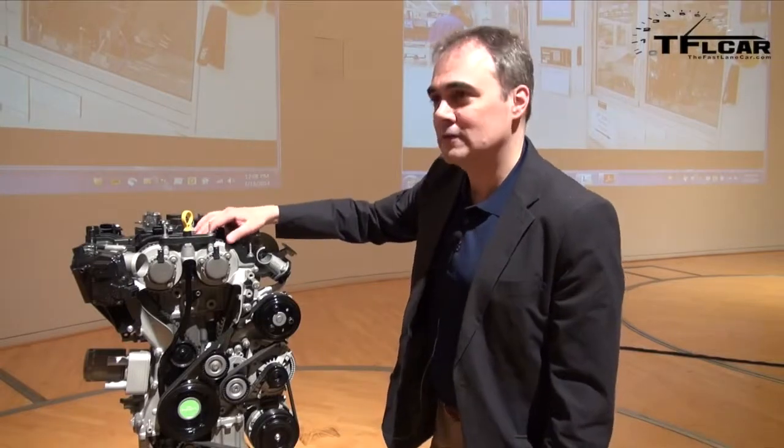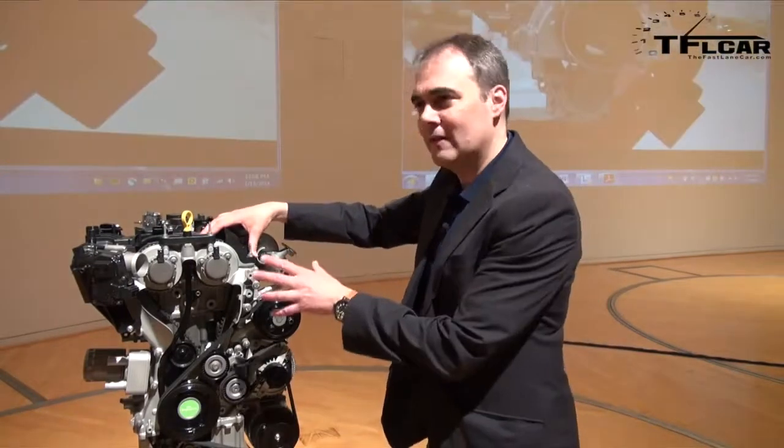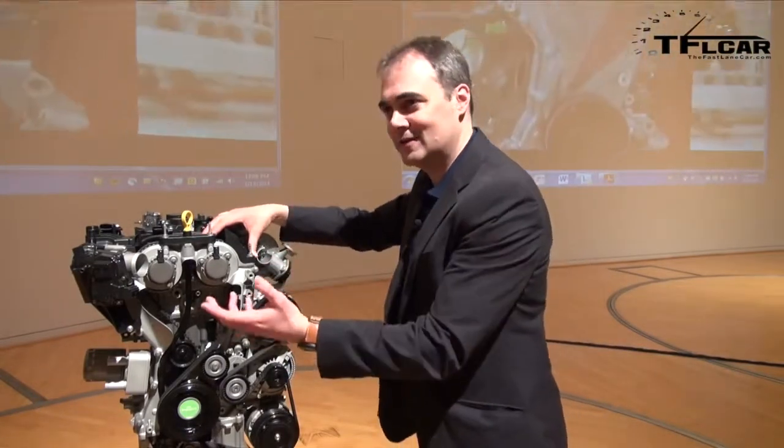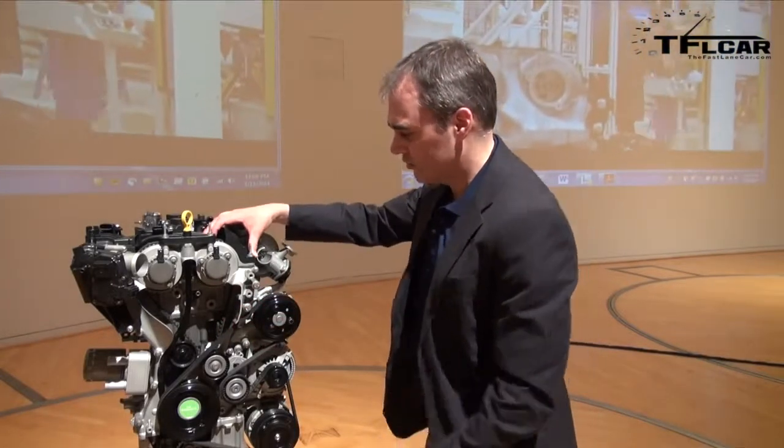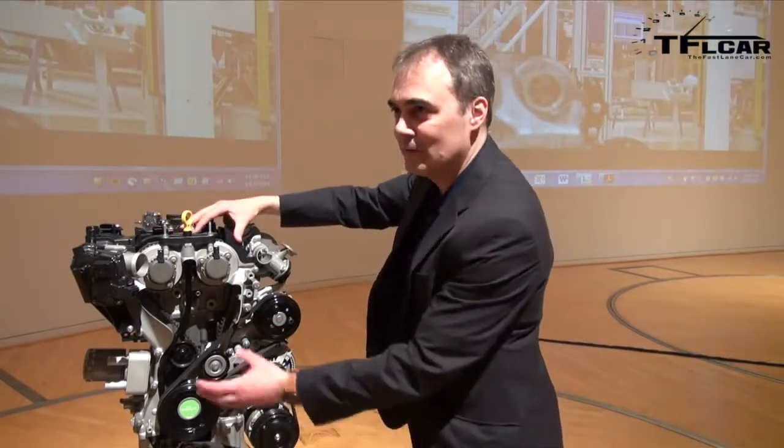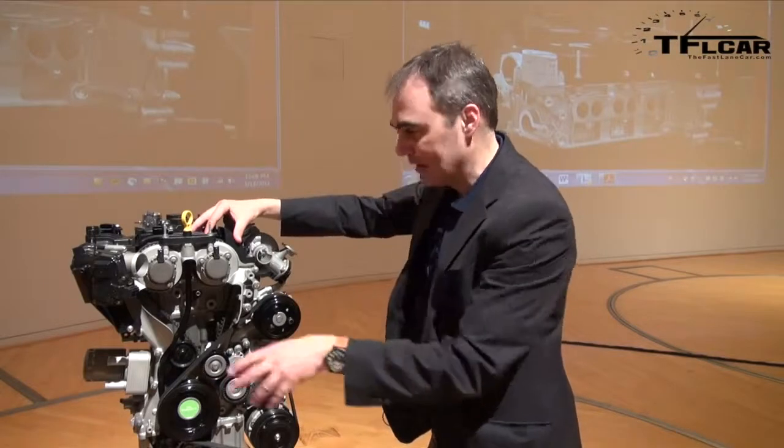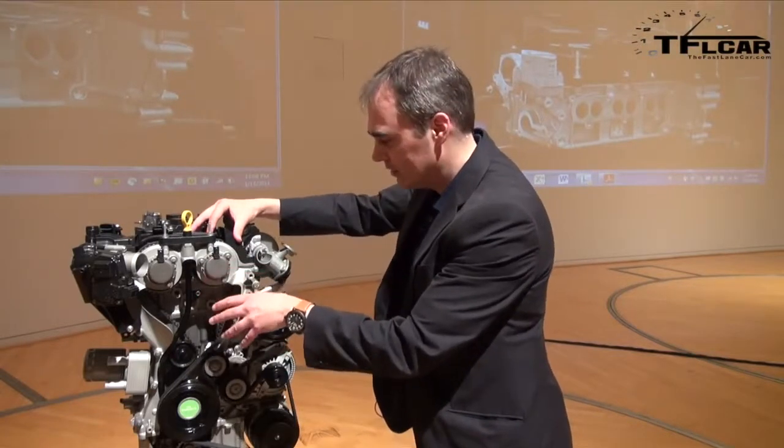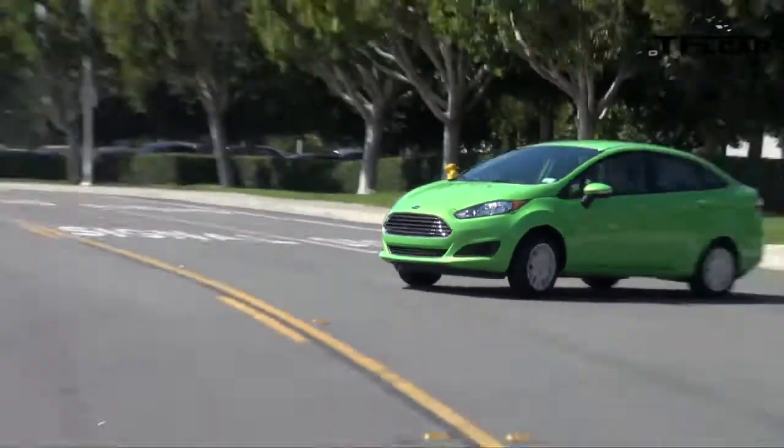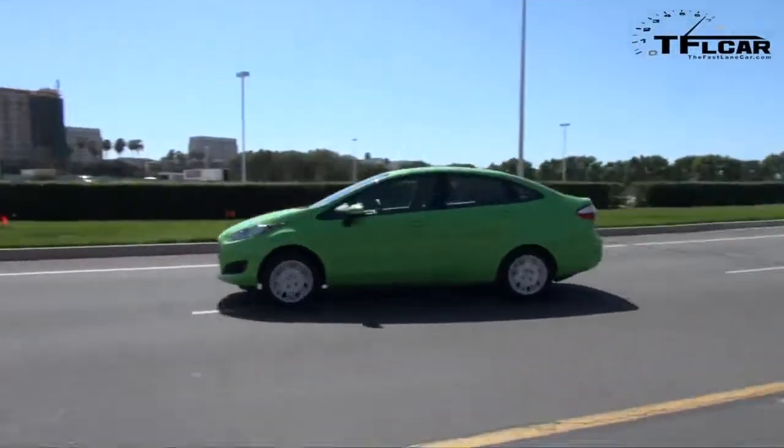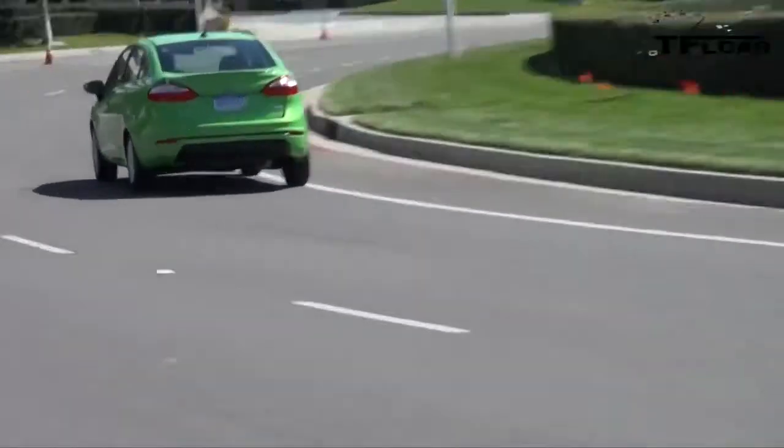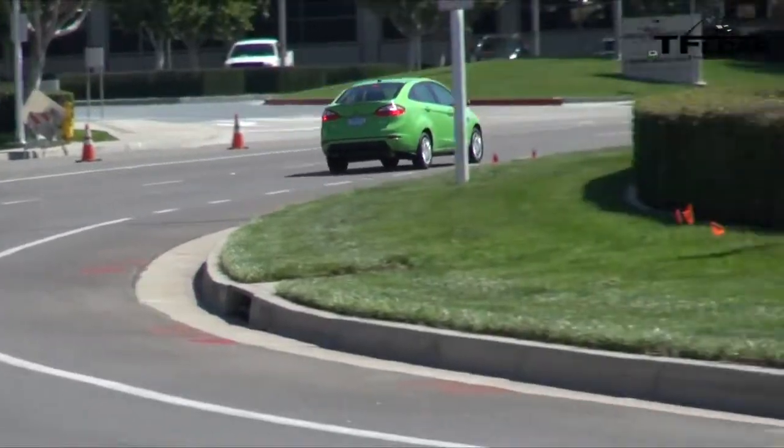It's called the belt in oil, which is unusual. Typically, you may have a chain or a dry belt sitting outside the engine. This drives the camshafts from the crankshaft. And we've put it inside in the engine. And you get further friction benefits and further fuel reduction. And it's sealed for life.